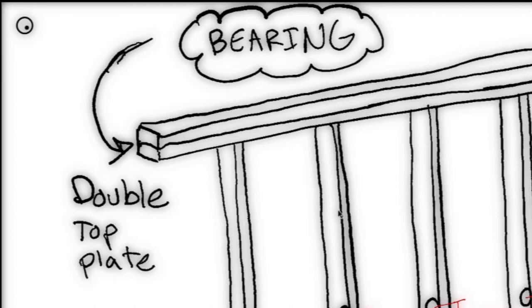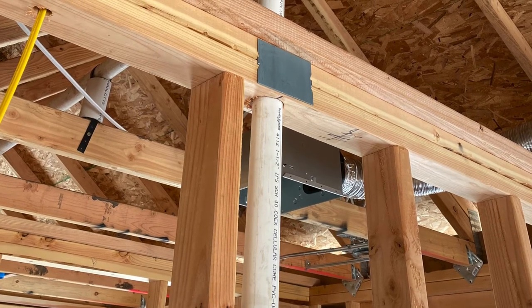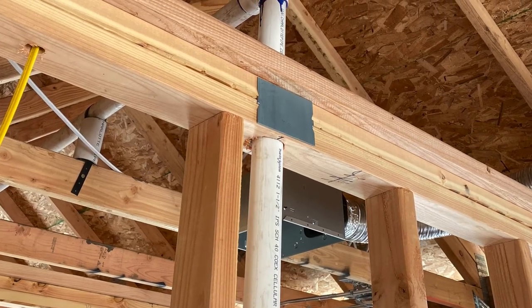These hold up joists, trusses, or other structural members. A good way to identify a bearing wall is that there are going to be two boards on the top plate. So you can look for that when you're on the rough. Notice the walls that have two boards on the top plate.